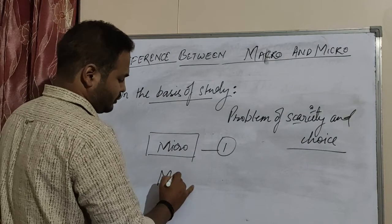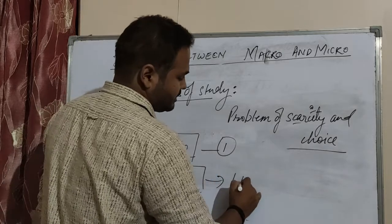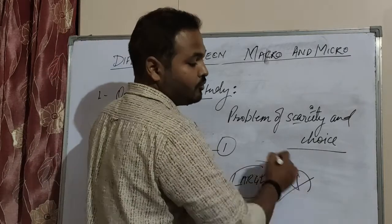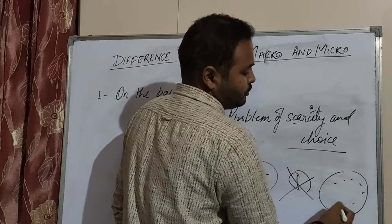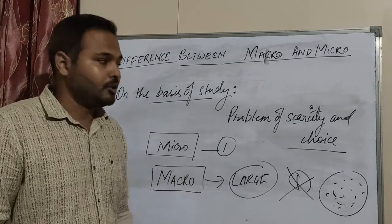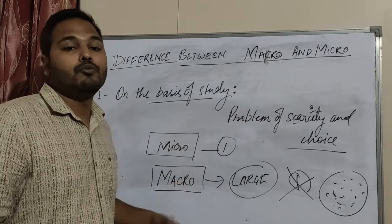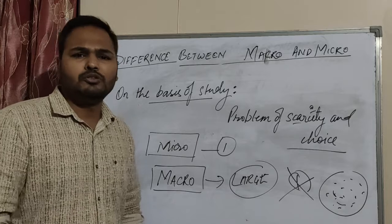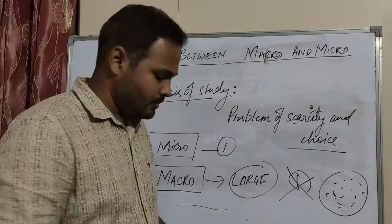But when we talk about macroeconomics at the macro level, the number is large — there will not be a single person, there will be many persons, many individuals, many households, or many firms. It is not a problem for only a single person like in microeconomics; it will be a problem for a large number of persons, households, consumers, producers — whatever comes under the economy as a whole.